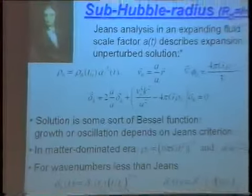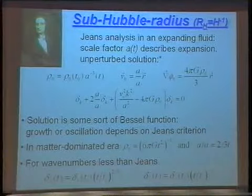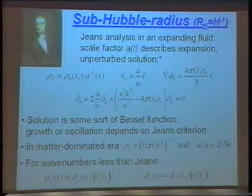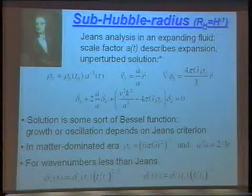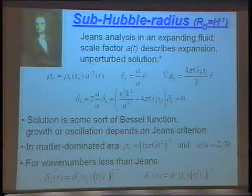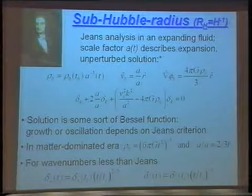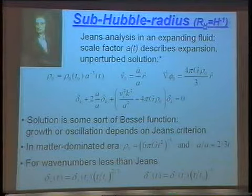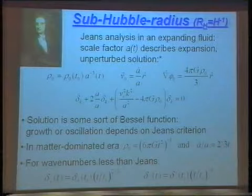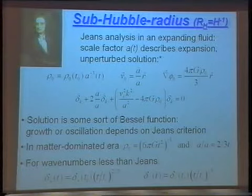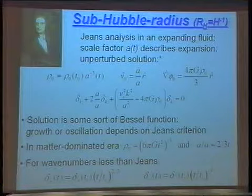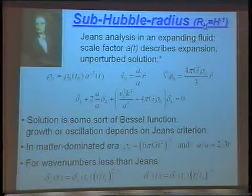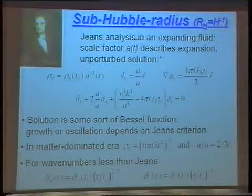This power law growth is true in a matter-dominated era. If we look at perturbations in a radiation-dominated era, matter density perturbations do not grow. So in a radiation-dominated era, matter density perturbations are constant, while in a matter-dominated era they grow as the scale factor to the two-thirds. We've now studied the Jeans instability in a non-expanding fluid, and gravitational instability in an expanding universe on scales smaller than the Hubble radius. To analyze scales larger than the Hubble radius — super-Hubble radius perturbations — you really have to employ general relativity.